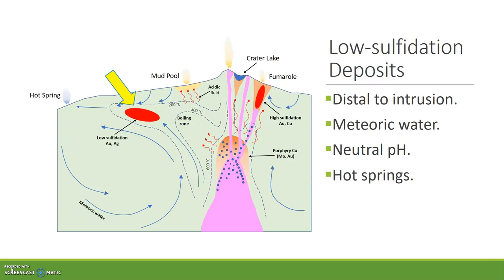Low sulfidation hydrothermal fluids are a combination of magmatic and meteoric water. Meteoric fluids — those formed from rainwater — percolate down through the crust and become heated due to the elevated geothermal gradient caused by the igneous intrusions. They mix with magmatic fluids that have exsolved from the cooling intrusions and rise back through cracks in the crust. Vein formation takes place primarily due to depressurization and phase separation from neutral pH fluids.